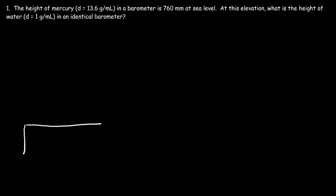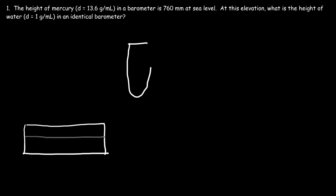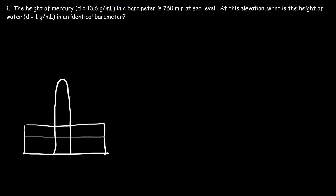Let's draw a mercury barometer. We have a container that is partially filled with mercury. We take a test tube, fill it with mercury, and flip it upside down. Inside the test tube there is going to be a vacuum — there are no air molecules there because the mercury displaces any air that was present. On the outside, we have gas molecules, and the weight of all these gases in the atmosphere will exert a downward force on the surface of that fluid.